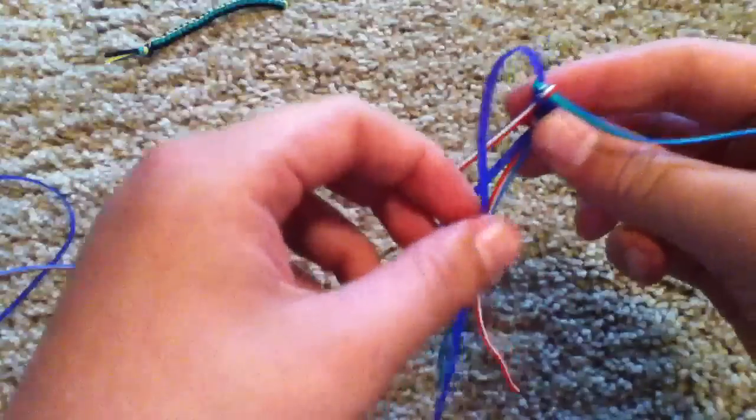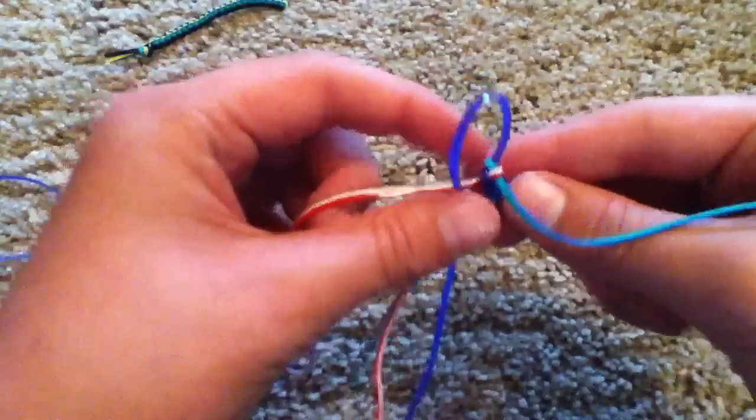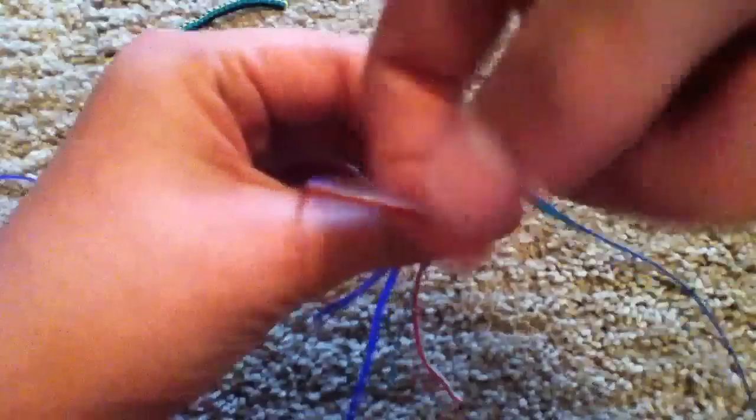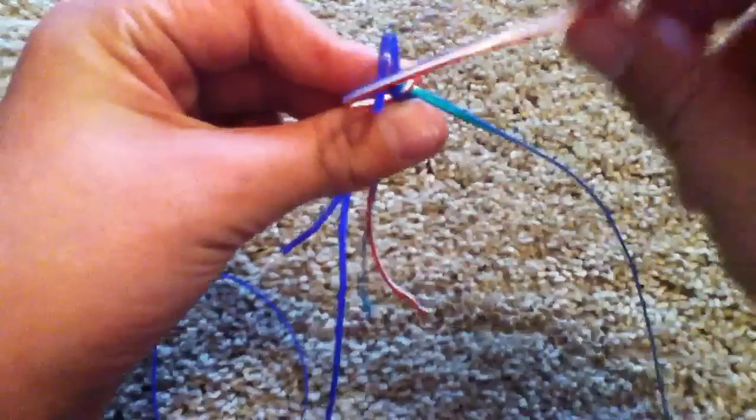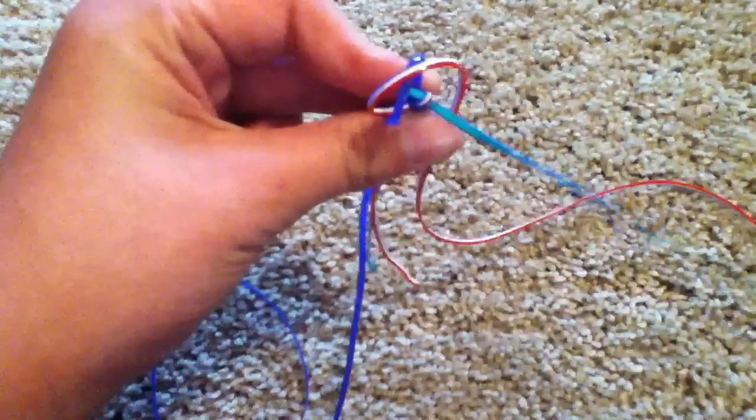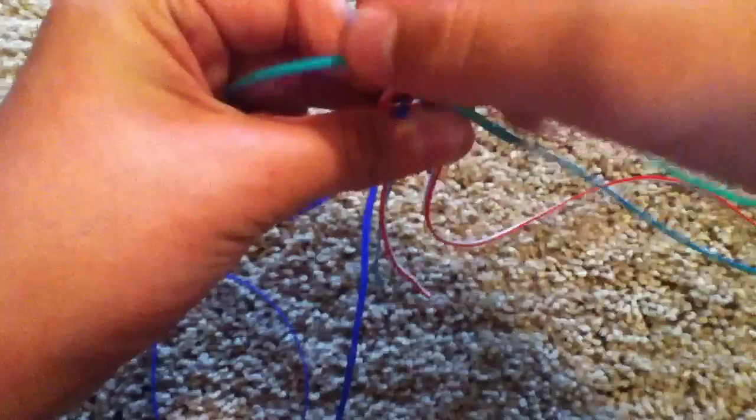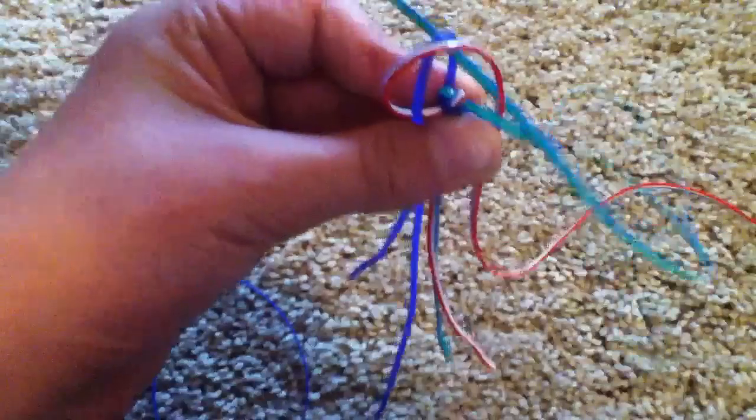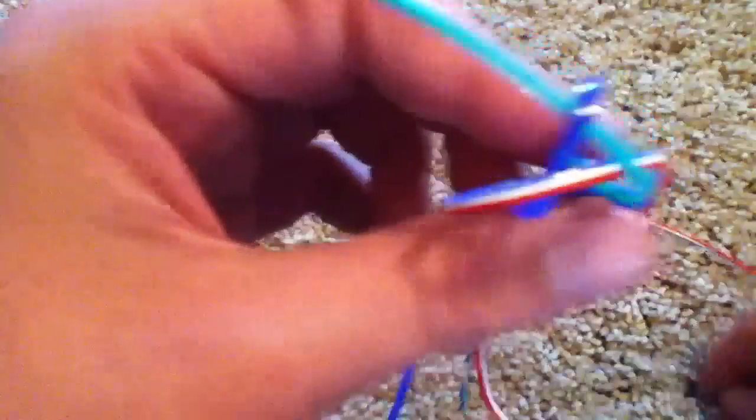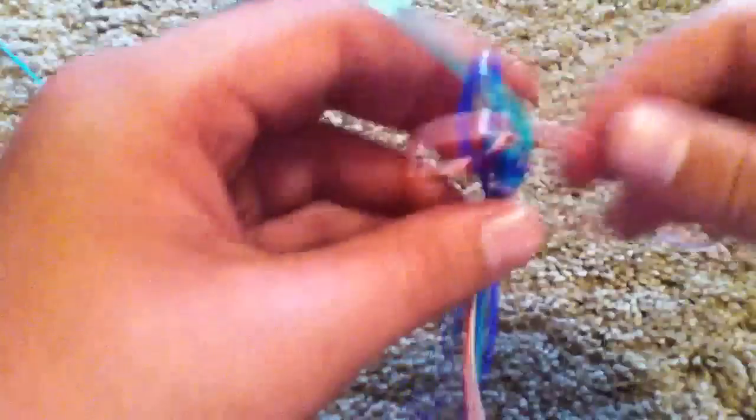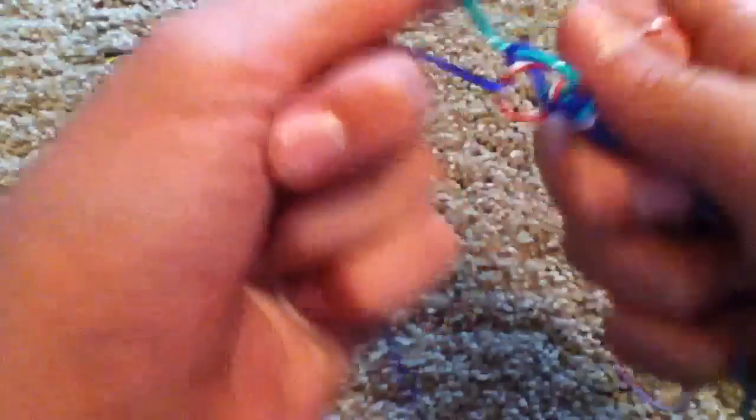So, make a loop over the red. Take the red over the blue and on top of the green. Then take the green over the red and through the blue. And it should look like that. Then pull.